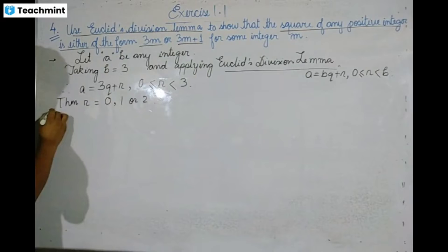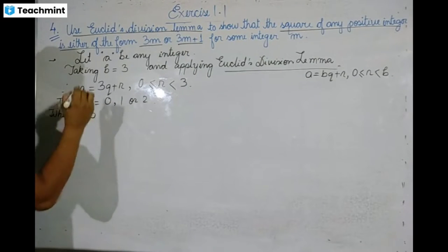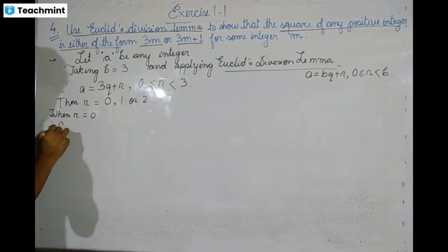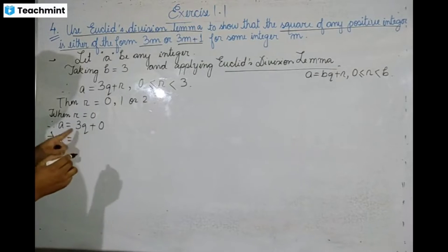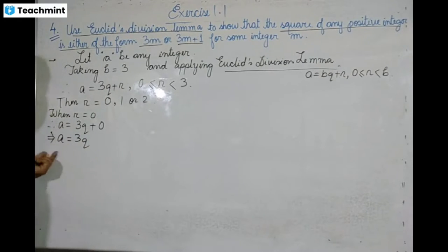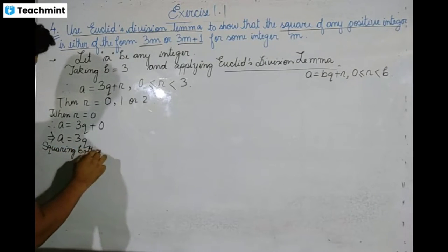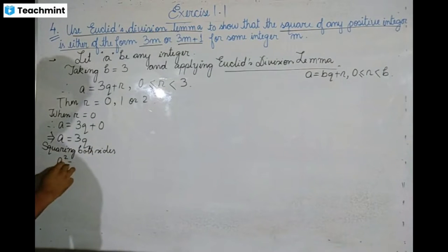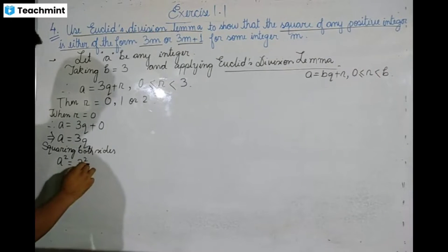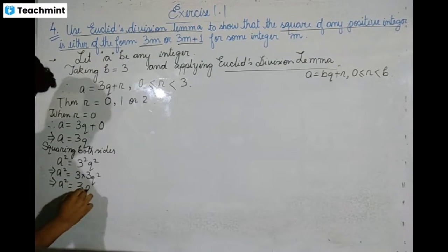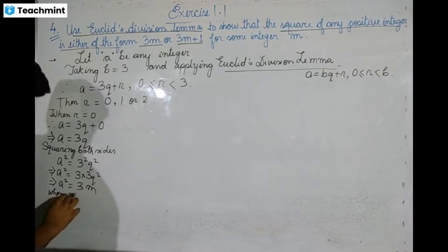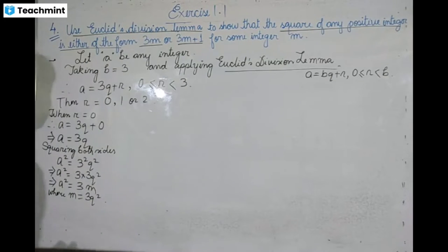First, let us take when R is equal to 0. Therefore A becomes 3Q plus 0, which is 3Q. Squaring both sides, we get A² = 9Q² = 3(3Q²). We write this as 3M, where M is equal to 3Q².